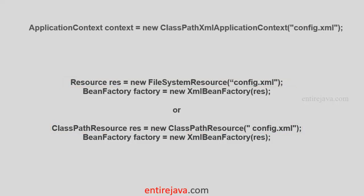Here we have a couple of examples to demonstrate the same. If you'd like to read the XML file from the file system, you have to create the corresponding resource and then feed that as an argument to the Bean Factory constructor. On the other hand, if you'd like to read the XML file from the class path, then you would use a class path resource to do that job. Likewise, we have many different ways to define the Bean Factory — you have to choose the one that serves your purpose.